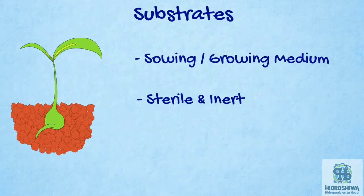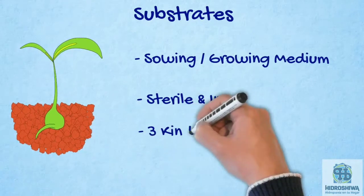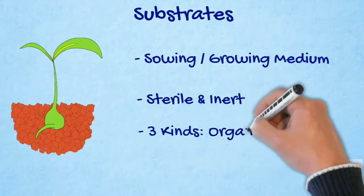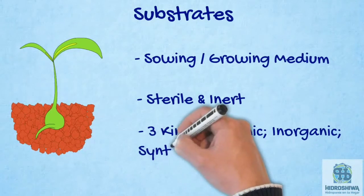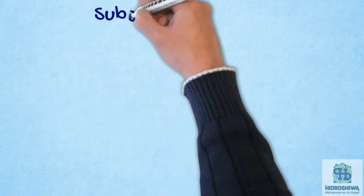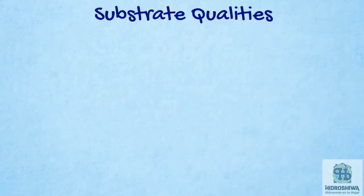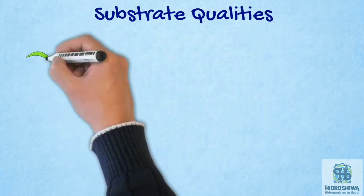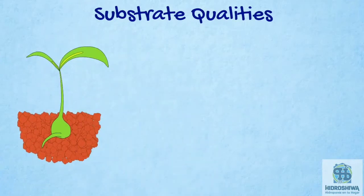There are three groups of substrate: the organic, inorganic, and synthetic. Since the beginning of hydroponics, substrates were considered as materials of rare importance, since they must have a mixture of favorable qualities for growing.